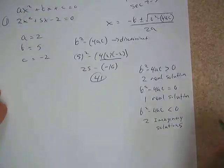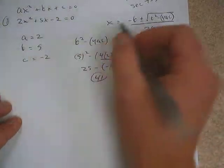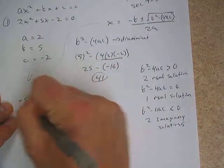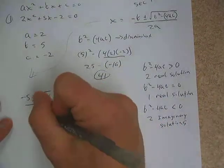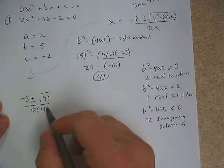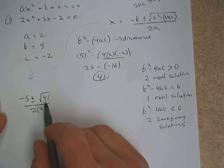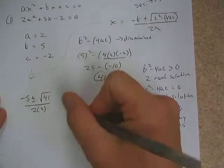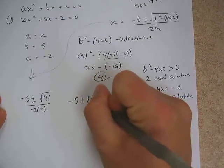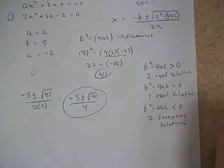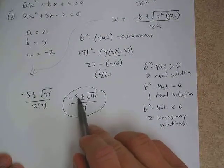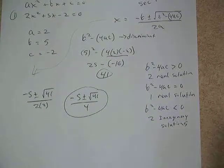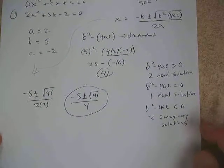Once we calculate the discriminant, we apply the full formula. Opposite of b is negative 5, plus and minus the square root of 41 — we already calculated 41 — all over 2 times 2. We check whether 41 can be simplified; it's prime, so it cannot. Our final answer is negative 5 plus and minus the square root of 41, all over 4 — two solutions: (−5 + √41)/4 and (−5 − √41)/4.